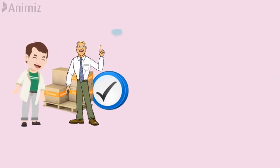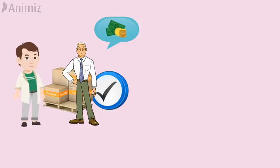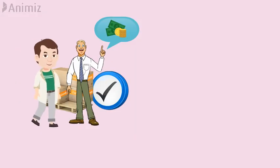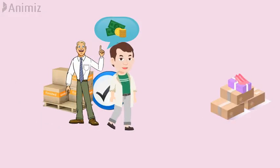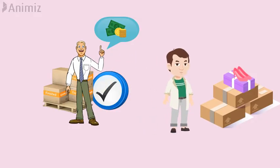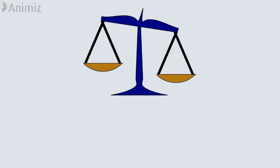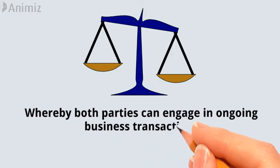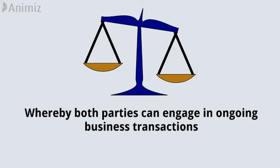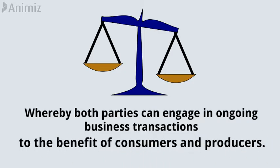Producers seek to sell their products for as much as possible. However, when prices become unreasonable, consumers will change their preferences and move away from the product. That's why a proper balance must be achieved whereby both parties can engage in ongoing business transactions to the benefit of consumers and producers.